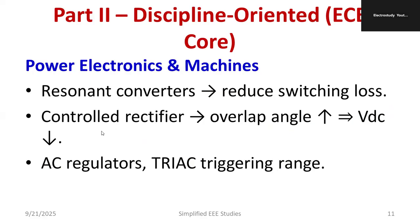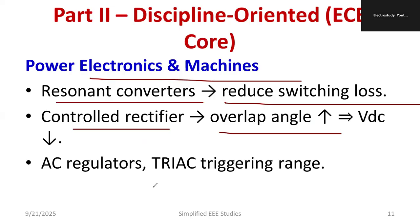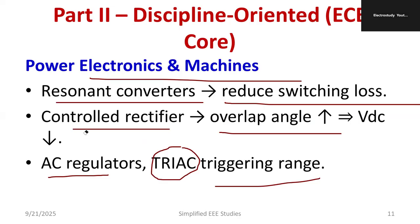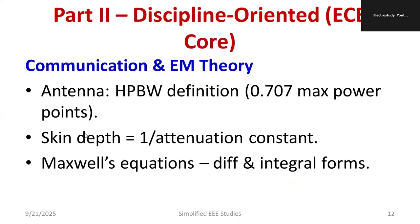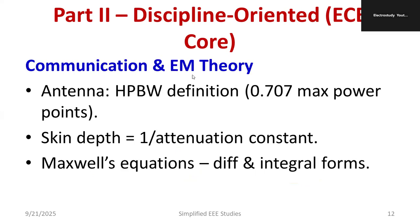From power electronics, you will get questions like: what is a resonant converter? Its purpose is to minimize switching losses. What is a controlled rectifier and what is the overlapping angle? What is an AC voltage regulator? What is a TRIAC (triode for alternating current triggering)? Study quadrant choppers: one quadrant, two quadrant, three quadrant, and four quadrant — also called type A, type B, and type C choppers. These are among the most important and confusing topics for the examination.